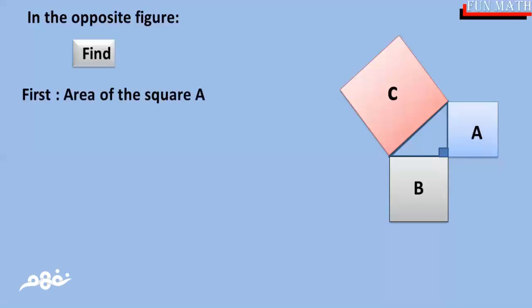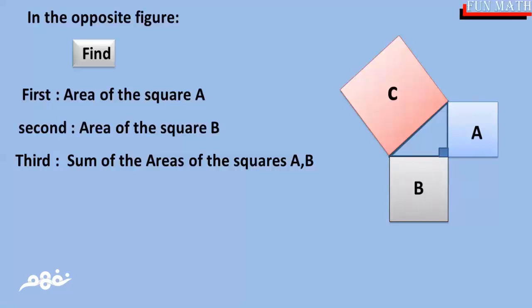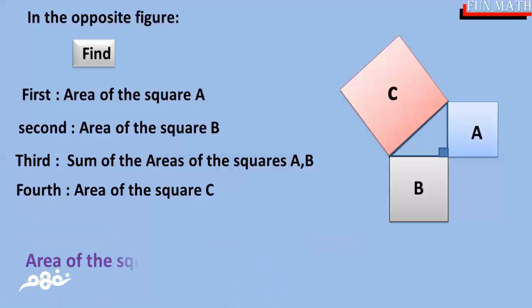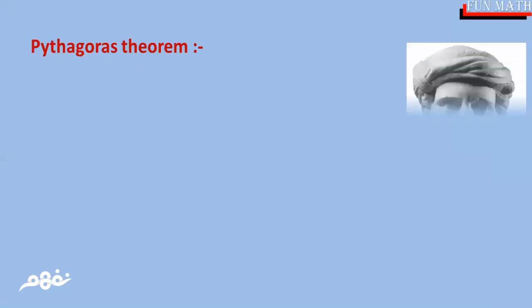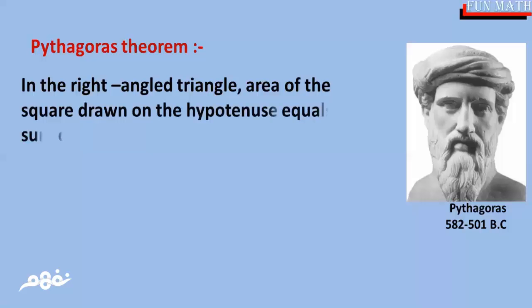find the area of square A, the area of square B, and the sum of the areas of squares A and B. For the area of square C, we find that area of square C equals the sum of the areas of squares A and B.